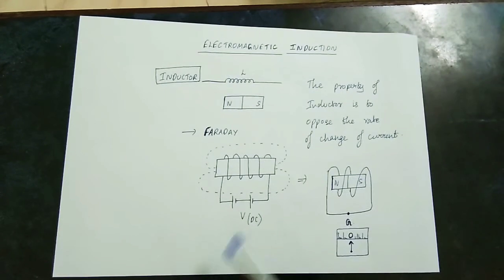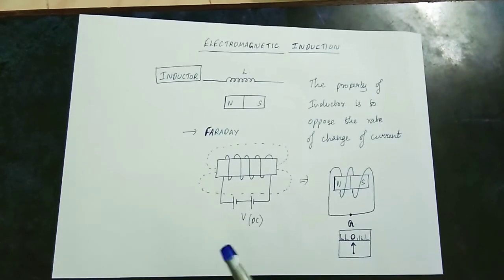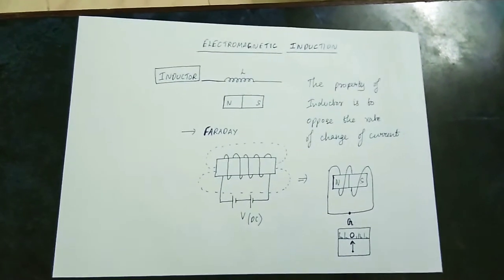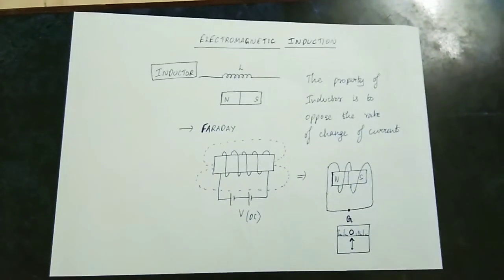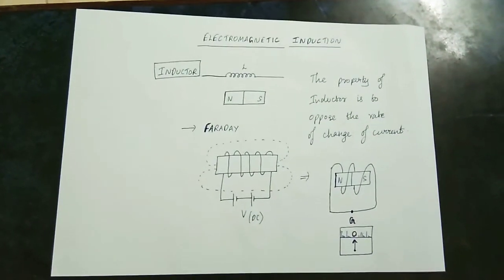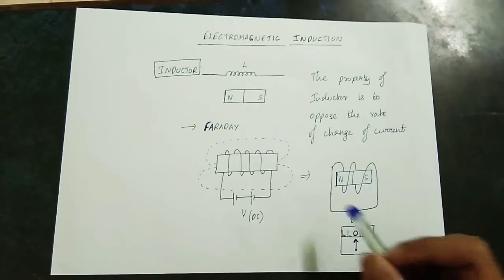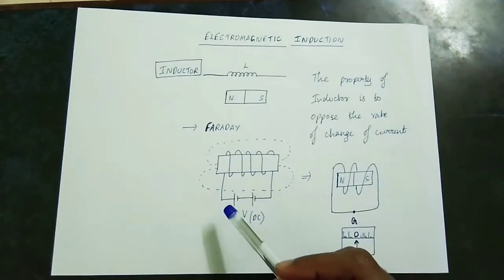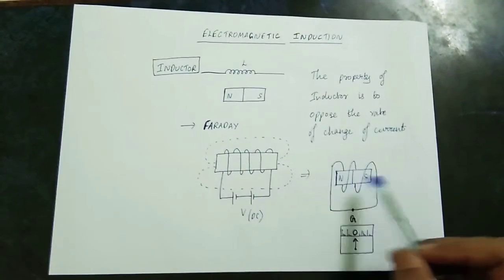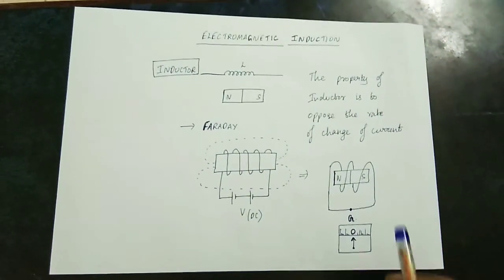If there is a conductor — a coil of wire that is wound — what we do is insert a permanent magnet. If you insert a permanent magnet, it doesn't need a DC supply or an external magnetic field. A North-South pole magnet is inserted into this coil.